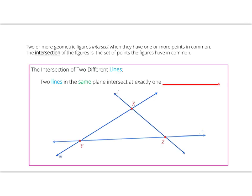Let's take a look at our first diagram of intersecting objects. When two or more geometric figures intersect, it's when they have one or more points in common. We can say that the intersection of the figures is the set of points the figures have in common.